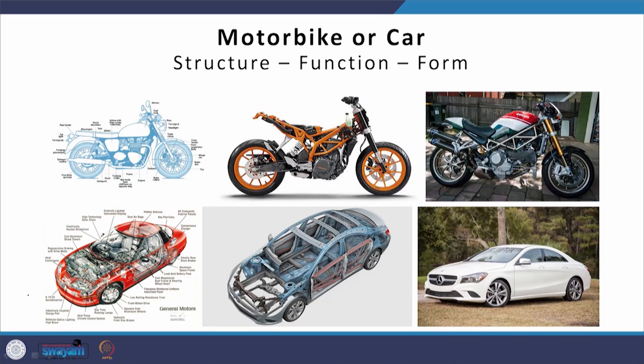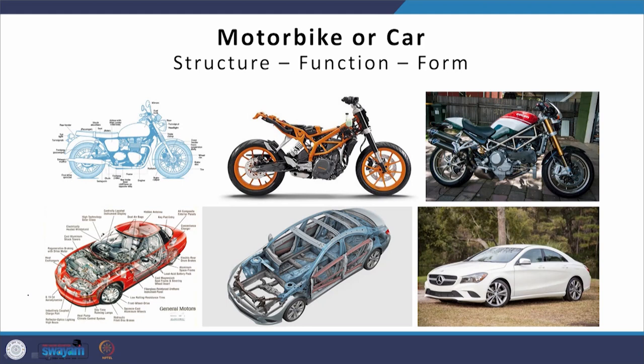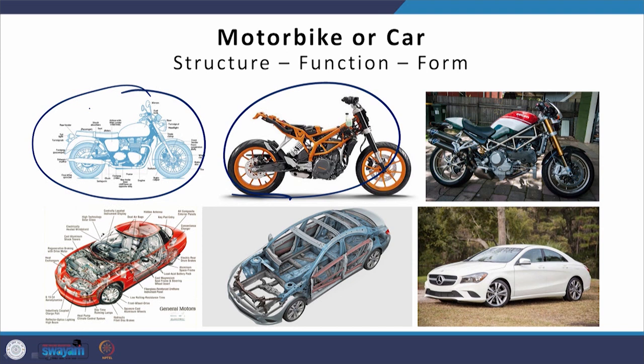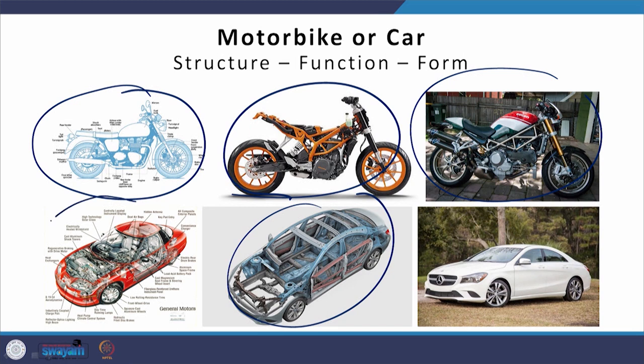This principle holds true for every product you see in daily life — not just buildings. For example, look at a motorcycle or a car. A motorcycle has a structure, it has various functional components, and finally the form as it appears to us. Similarly, in a car, here is the structure, this is the function, and this is what the car looks like — the form.